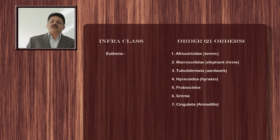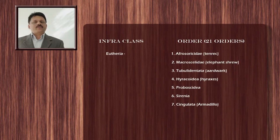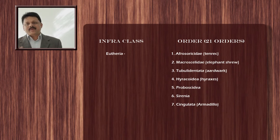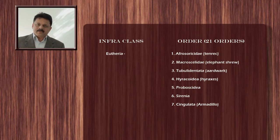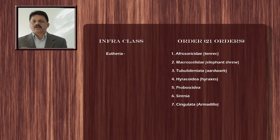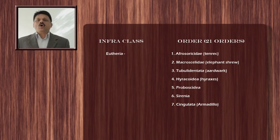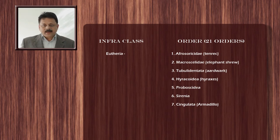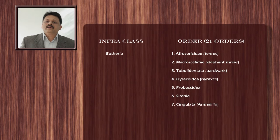Now coming to infra-class Eutheria, which has 21 orders. Eutherians are also referred to as placental mammals, characterized by the presence of a placenta. The first order is Afrosoricida, which includes a group called tenrecs. The second order is Macroscelidea, which includes elephant shrews. The third order is Tubulidentata, which contains only one species — the aardvark. The fourth order is Hyracoidea, which includes hyraxes.